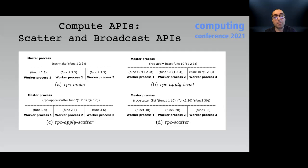Another scatter API is RPC scatter, which is designed to perform task parallelism instead of data parallelism as applied to other compute APIs. That way, users can execute different functions with different parameters on each worker process.